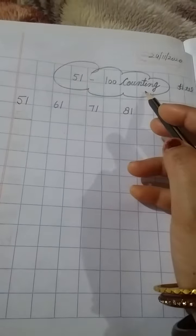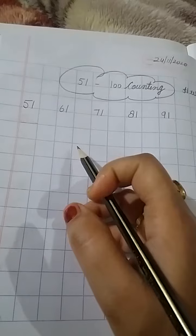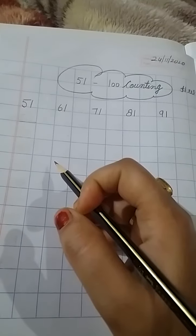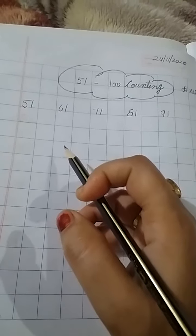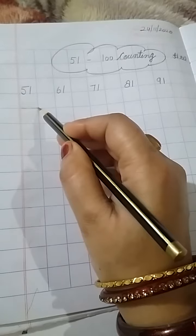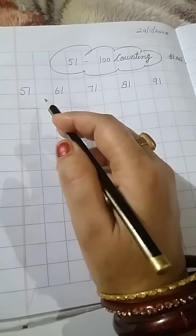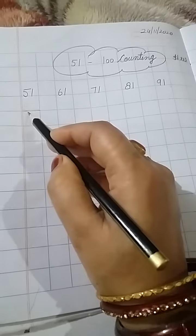Students, we have already done 51 to 100 counting. So, you have to do 51 to 100 counting in your math notebook. When you will start the writing, remember that touch the lower line and write in box.